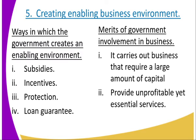Next, it is creating an enabling business environment. The ways in which the government creates an enabling business environment — remember we discussed the business environment in Form One. Number one, it is through subsidies. Number two, through incentives. Number three, protection. Number four, loan guarantees.